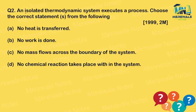Next question: 'Isolated thermodynamic system.' This is asked in GATE Mechanical as a 2-mark question in 1999 — a very old paper question. It asks what happens when an isolated thermodynamic system executes a process.